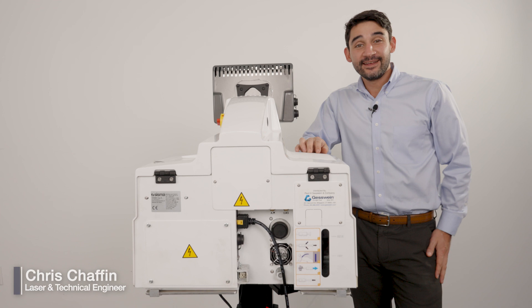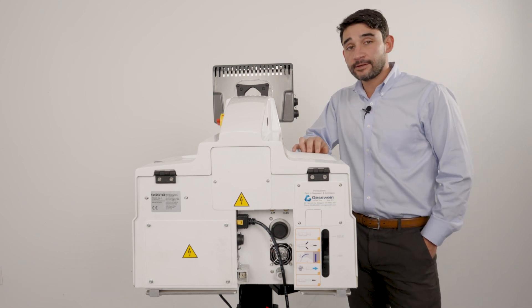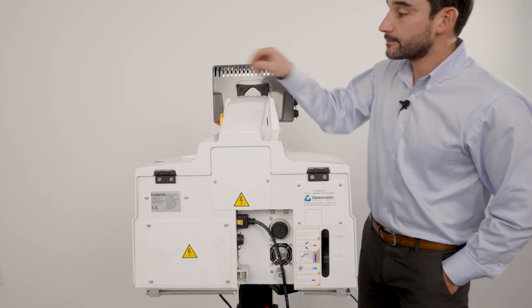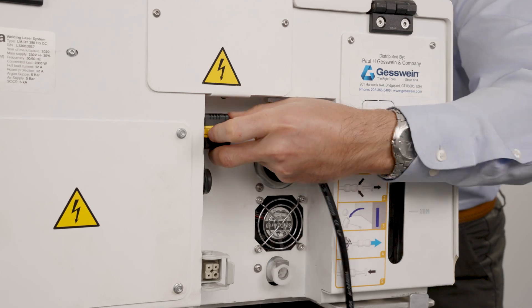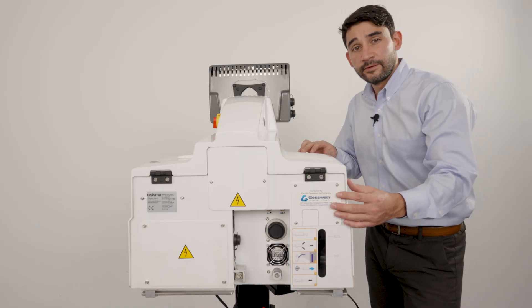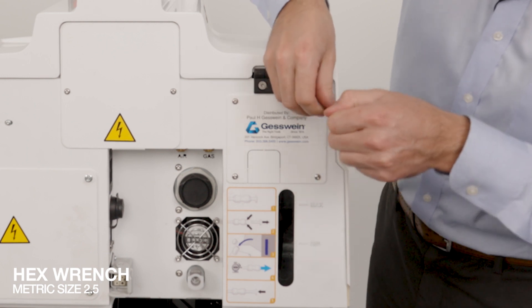Okay, let's take a look at doing the water maintenance here. First thing we want to do is turn off the machine and disconnect from power. Turn this red switch, disconnect the power supply, and we'll remove this side panel here. You can use the 2.5 metric hex wrench.